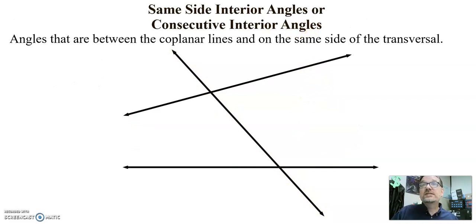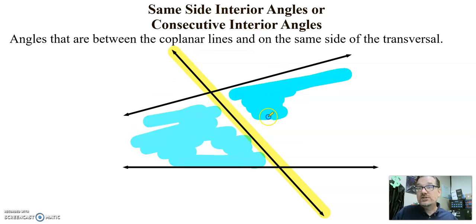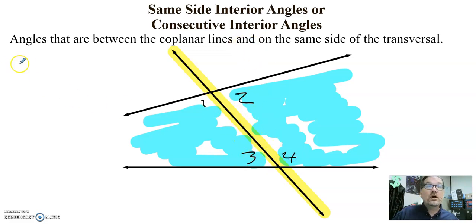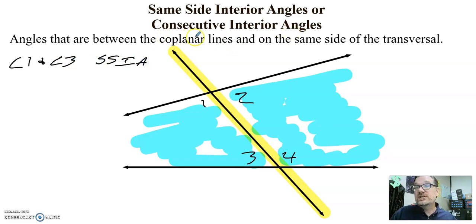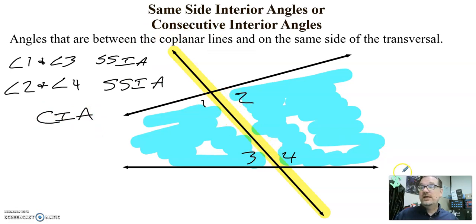Same side interior — or consecutive interior — they're the same angle pair. Highlight the transversal, shade on the inside. I'm looking at interior angles one, two, three, and four. They need to be on the same side of the transversal — both on the left or both on the right. Angle one and angle three are my same side interior angles. Angle two and angle four are also same side interior angles. We could also call them consecutive interior angles — you'll see them both ways. They're on the same side of the transversal and both on the inside.